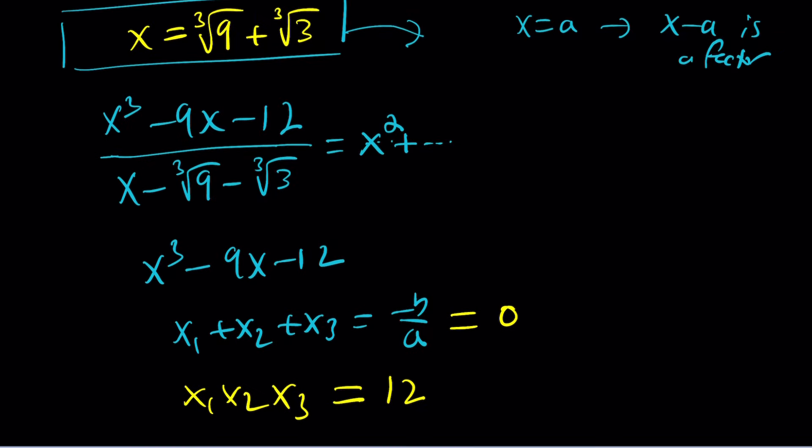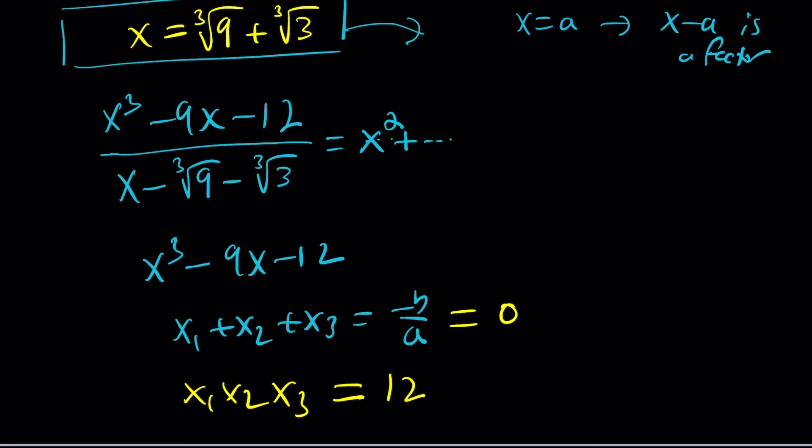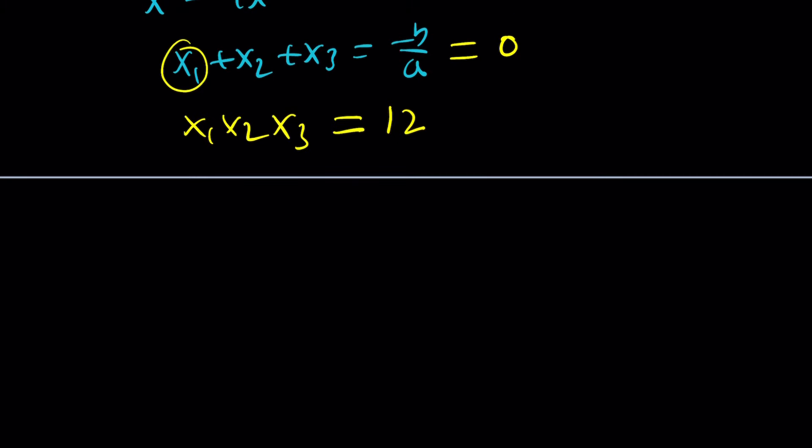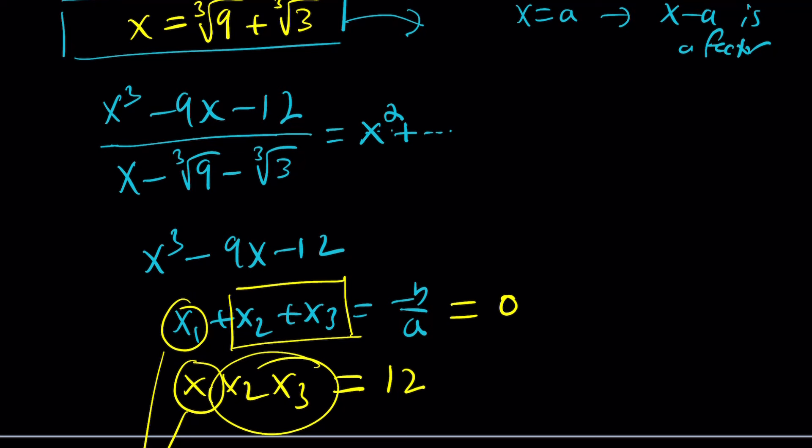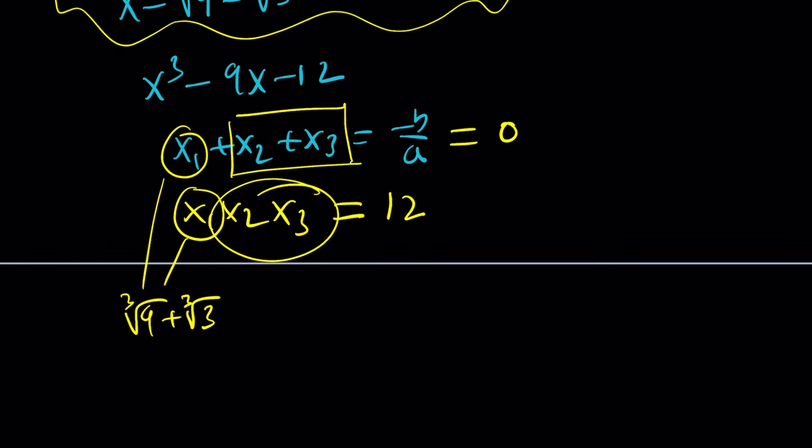We can replace x₁ with cube root of 9 plus cube root of 3. From here, we're going to get the sum of these two numbers and the product of the same numbers, and we can set up a system. But guess what? It's going to give you the exact same quadratic that you will obtain from the other method. This is going to be a lot easier, in my opinion. Now, is there another way to solve this problem?